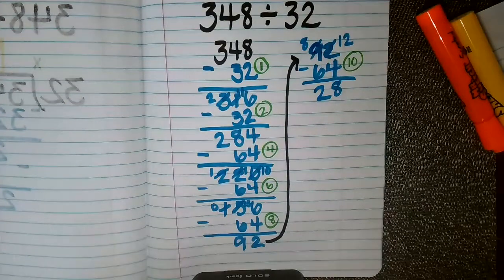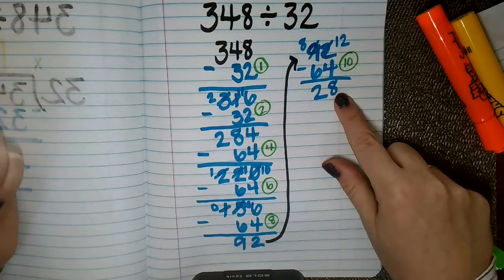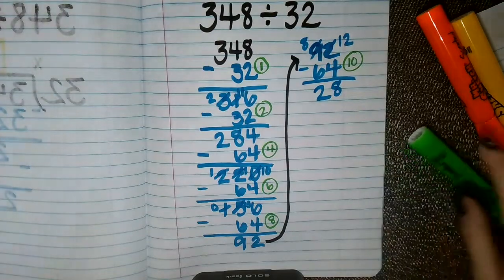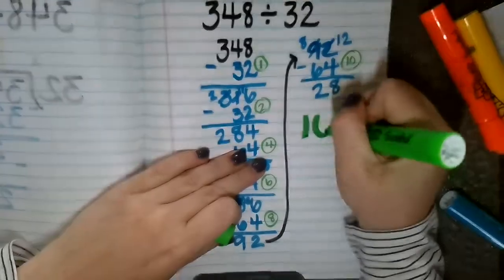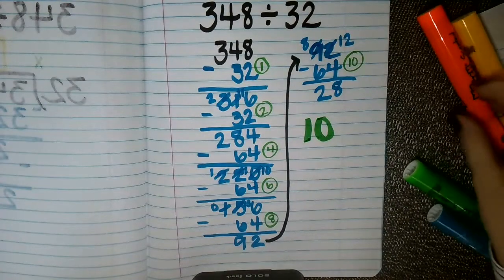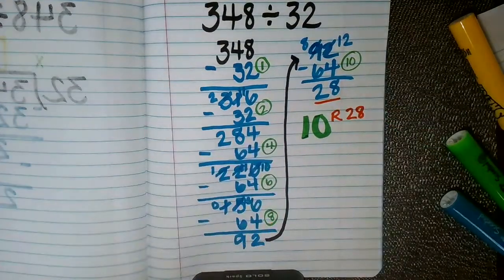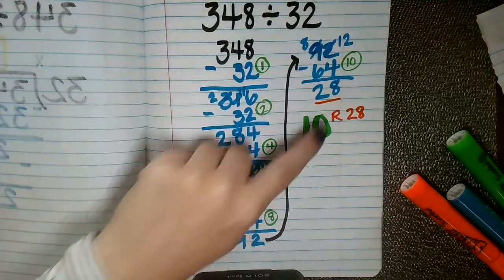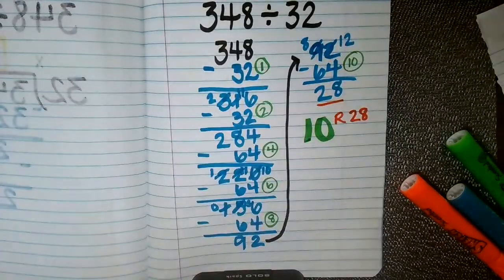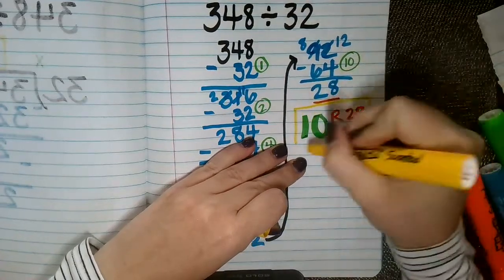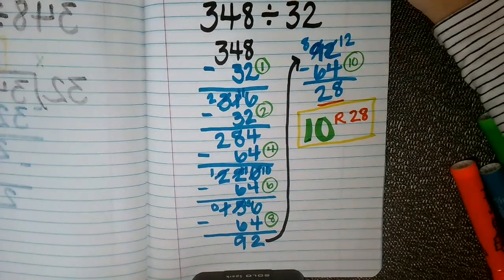Now this is where I have to ask myself, can I take 32 away from 28 and still be at 0 or above? And the answer is no, I can't do that. So at this point I know that my answer is going to be my 10 whole groups that I was able to take away with a remainder of 28. I was able to take 10 groups of 32 out of 348, and I had 28 left over, 28 remaining after I did that. So this was practice two of the repeated subtraction strategy for division.